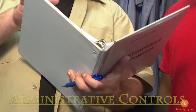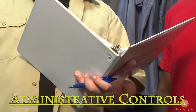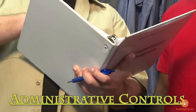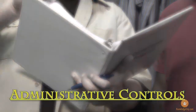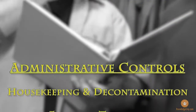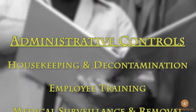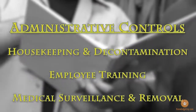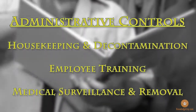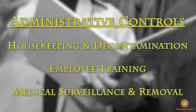Administrative controls include policies and procedures such as safe work practices for housekeeping and decontamination, employee training, and medical surveillance and removal programs.